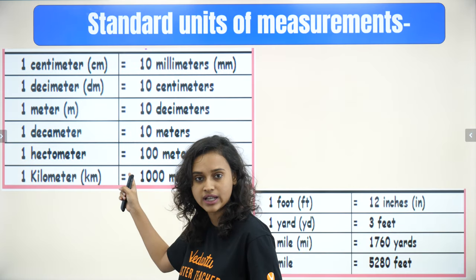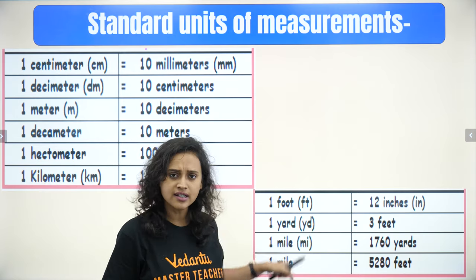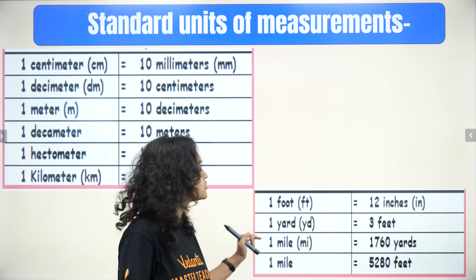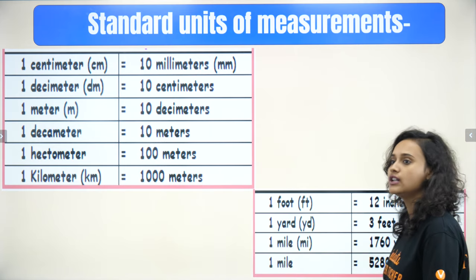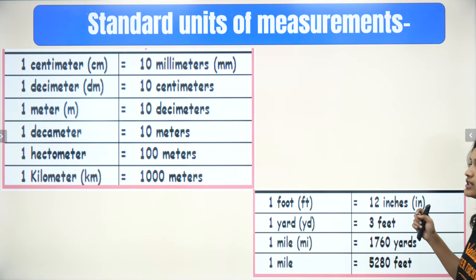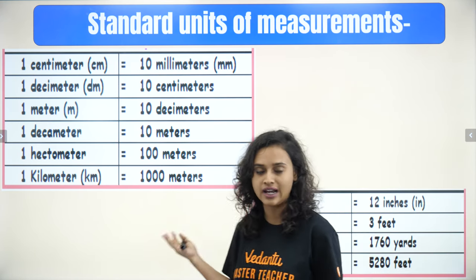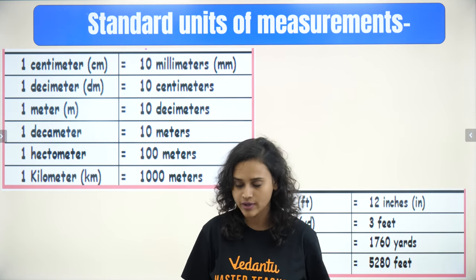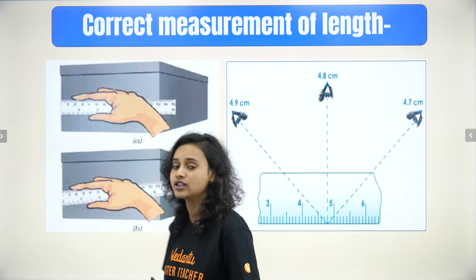Right here you can see the metric system of standard units. This is the metric system for measurement of length. There is also another system of standard units. Please take a screenshot of this. Standard units ensure that a reading is the same for everybody — it will be uniform for everyone.